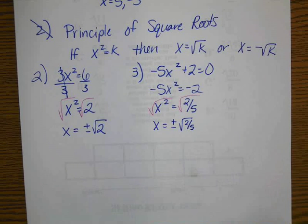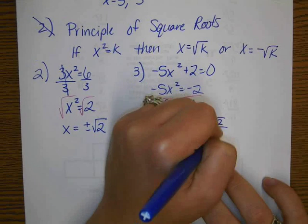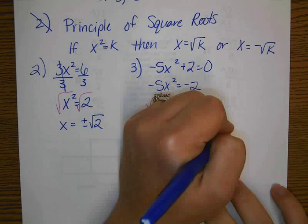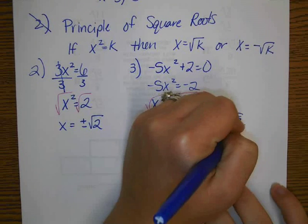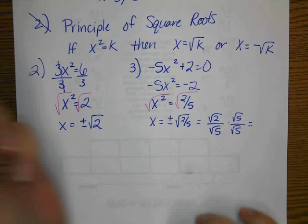And we get x equals plus or minus the square root of 2 fifths. Now, as we know, we can't leave a fraction under a radical because technically that is like having a radical in the denominator because you can take the square root of 2 over the square root of 5. So we always have to rationalize our solutions where we multiply by square root of 5 over square root of 5.